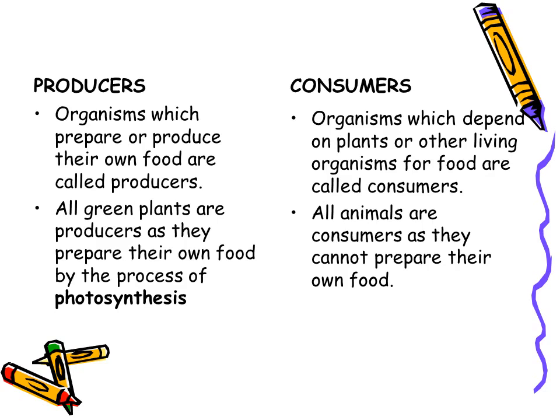Now coming to consumers. Organisms which depend on plants or other living organisms for food are called consumers. These organisms consume the food prepared by the producers — they take up the food and eat it. All animals are consumers as they cannot prepare their own food; we are dependent on plants for our food.